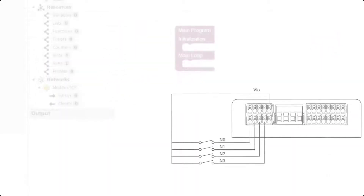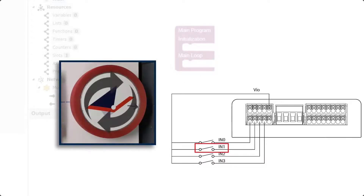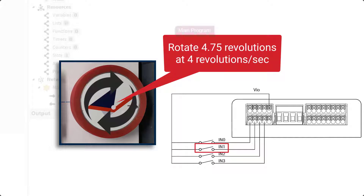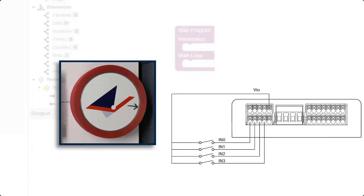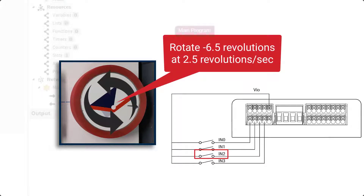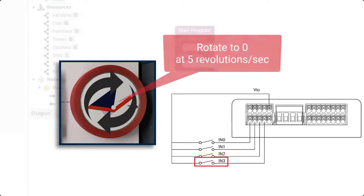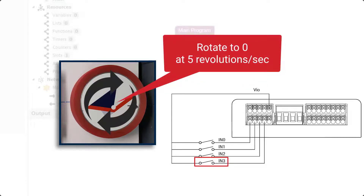For our demo, when we trigger digital input 1, we want the wheel to rotate to 4.75 revolutions from its zero position at a speed of 4 revolutions per second. When we trigger input 2, we want the wheel to rotate to negative 6.5 revolutions from zero at a speed of 2.5 revolutions per second. And when we trigger input 3, we want the wheel to return to its zero position at 5 revolutions per second.